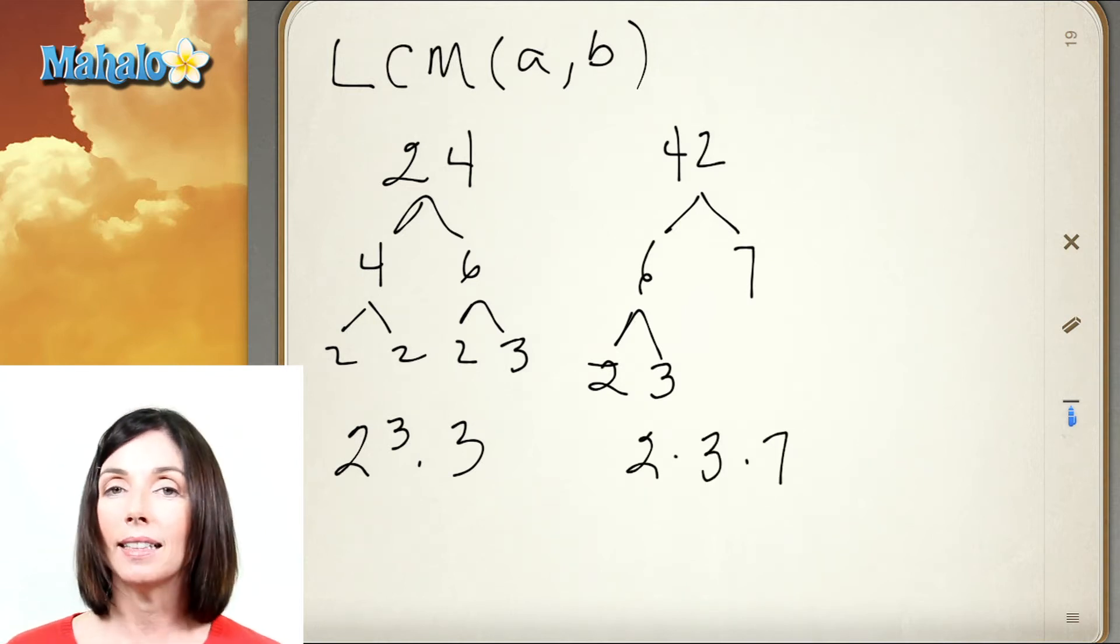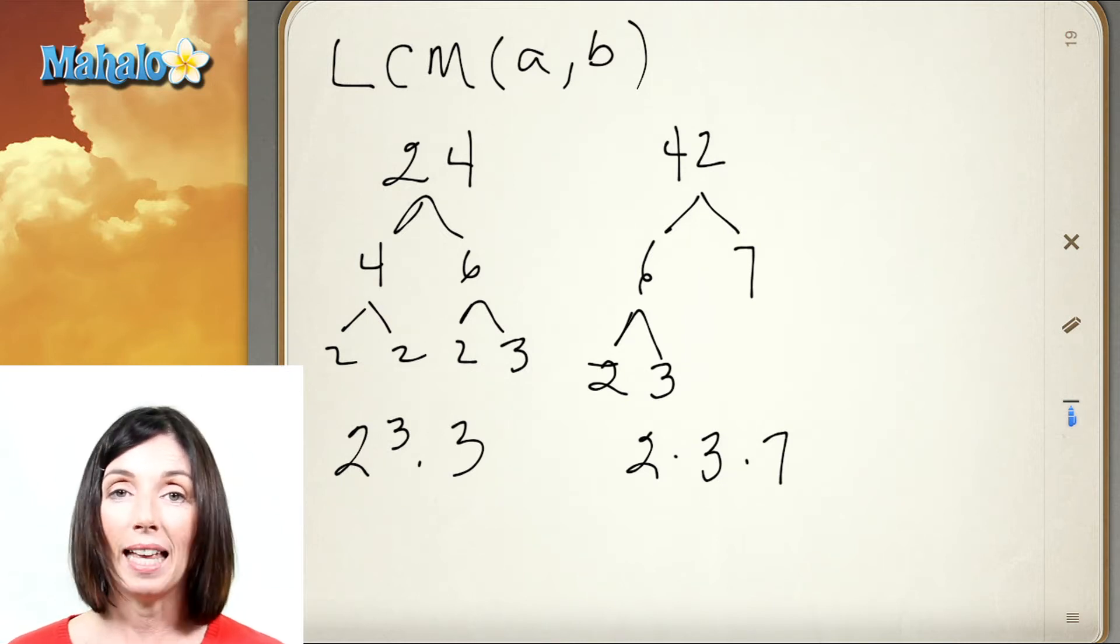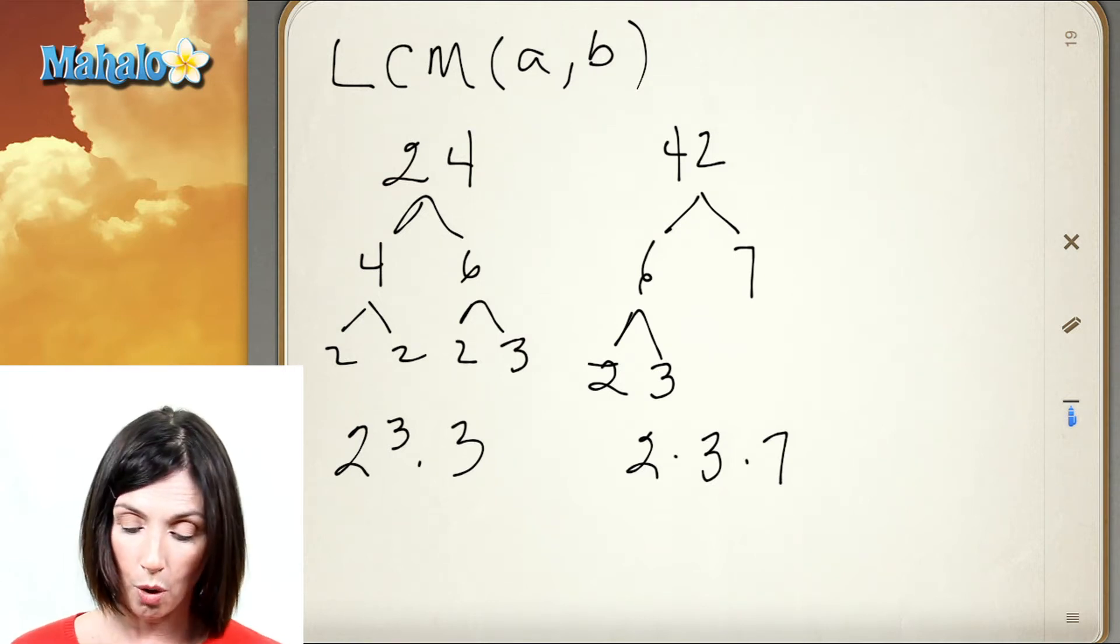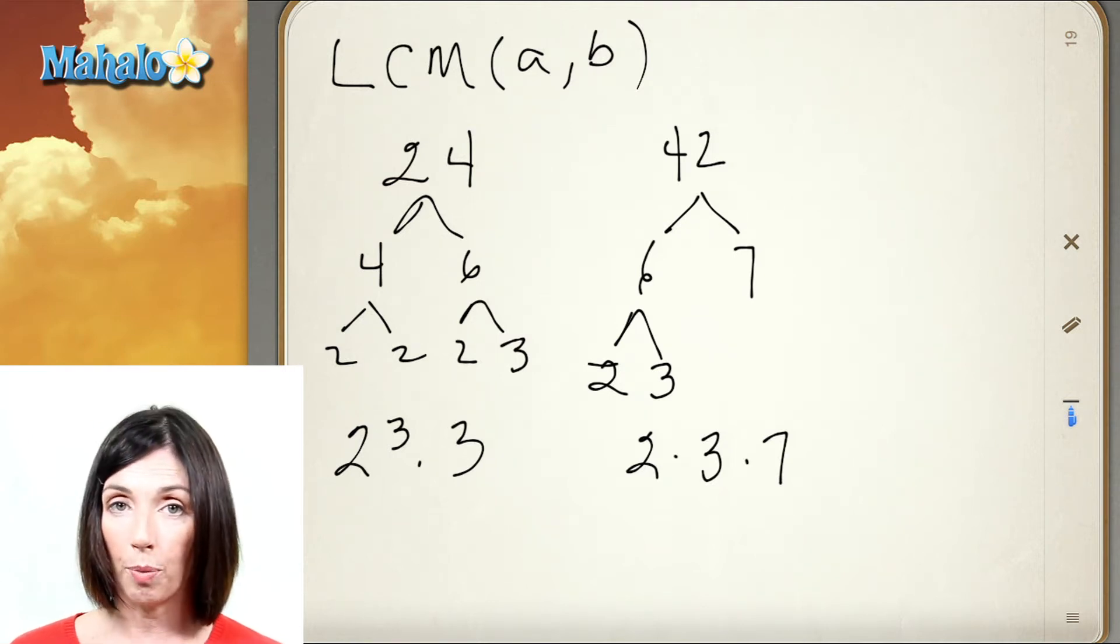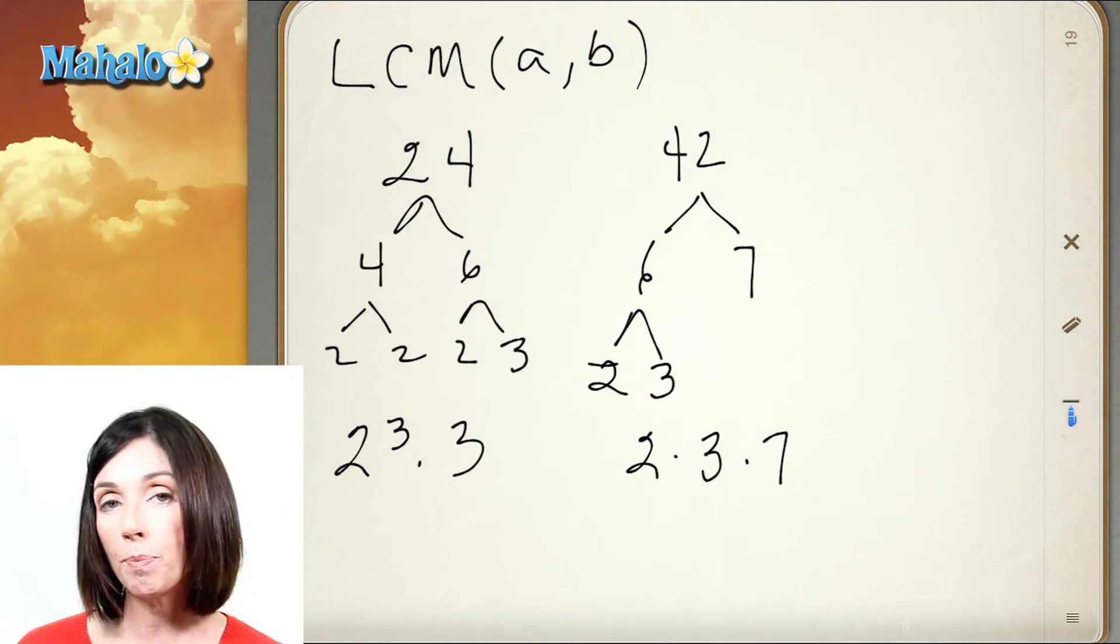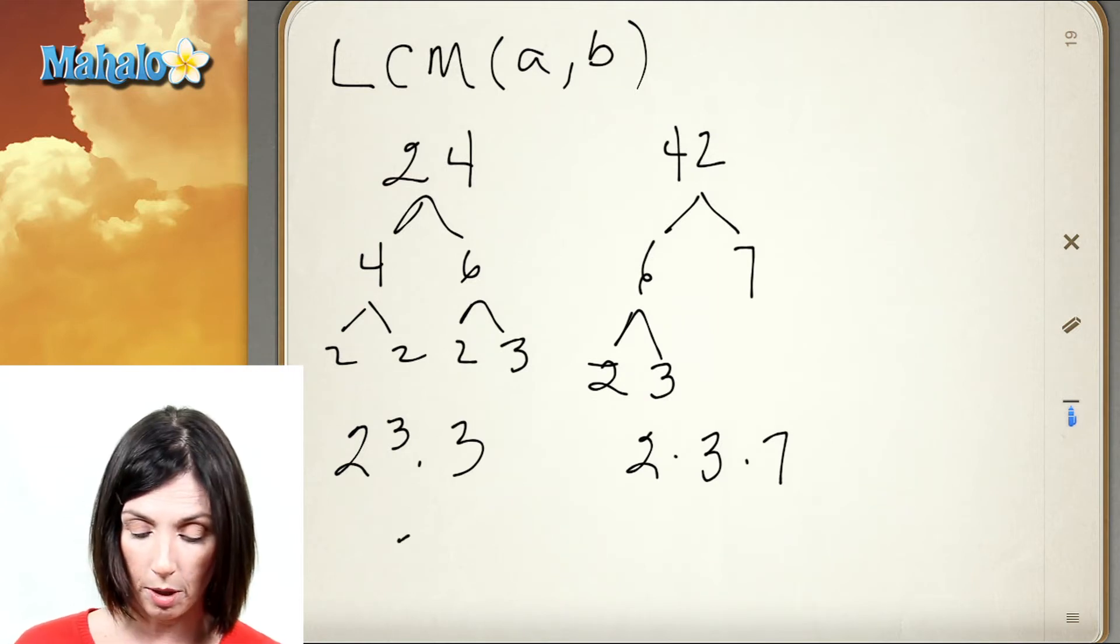Now to find the least common multiple I'm going to take the largest power of any number that appears in either prime factorization. Okay, so we have a 2 in both prime factorizations but the largest power is 2 cubed, so I'm going to take 2 cubed.